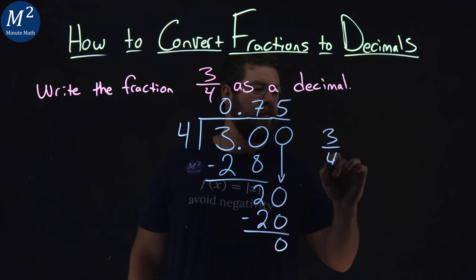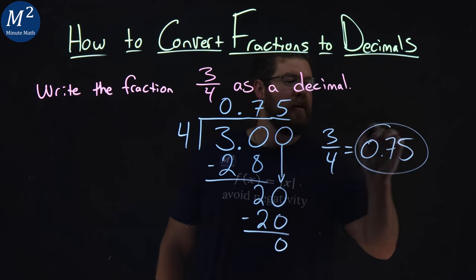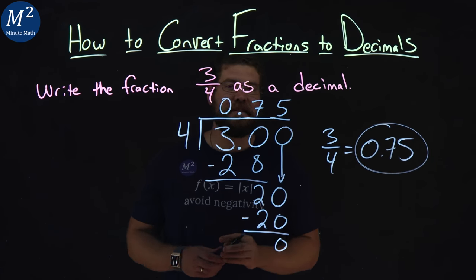And so, three-fourths is equal to 0.75, and that's how you convert three-fourths to a decimal.